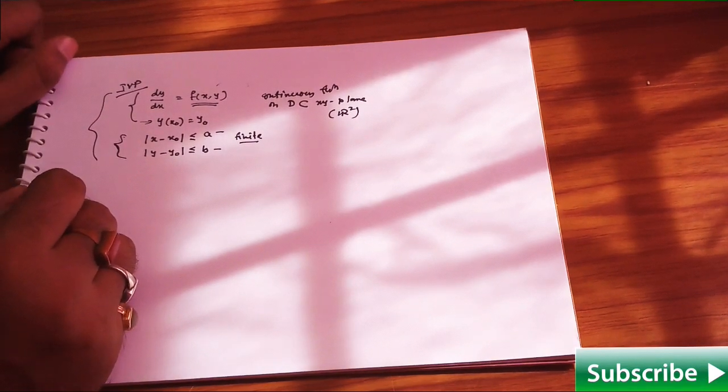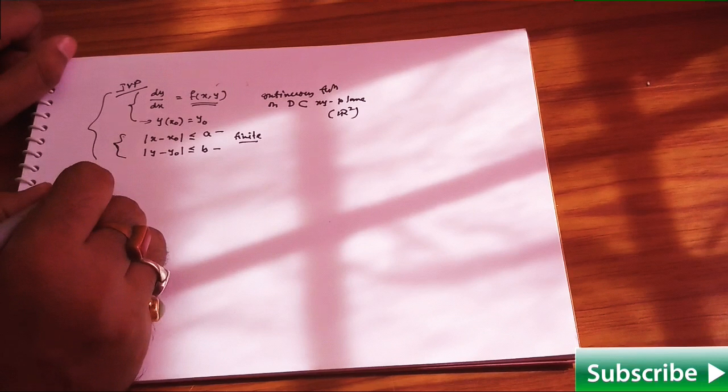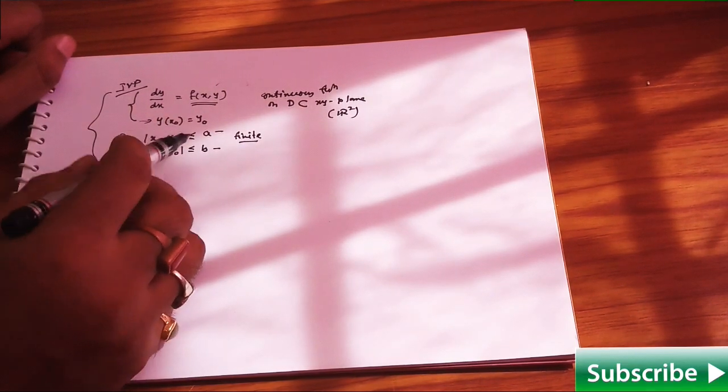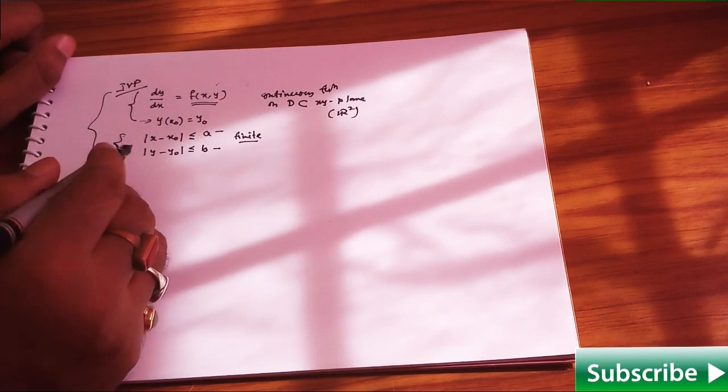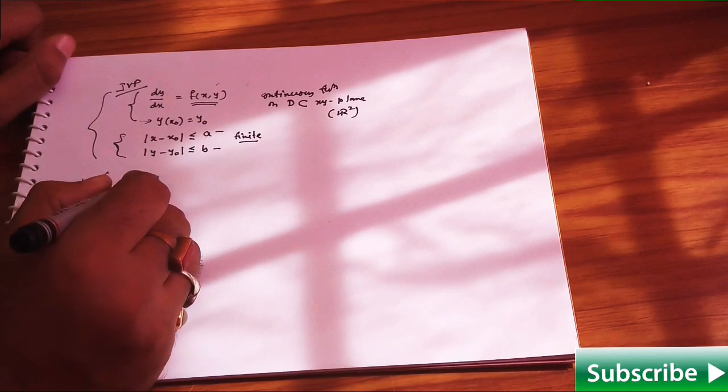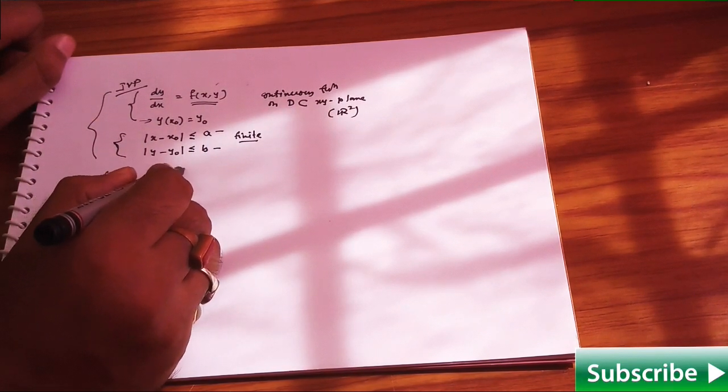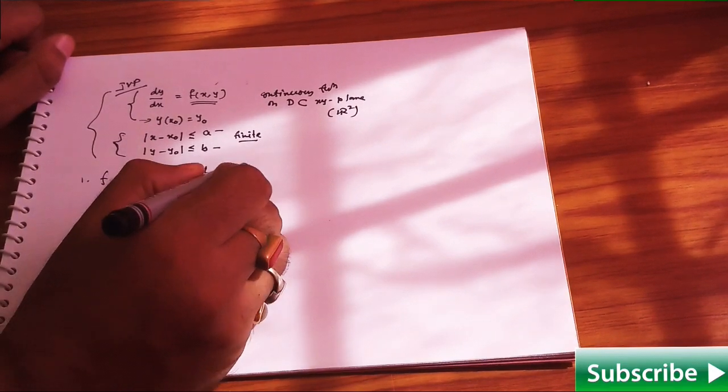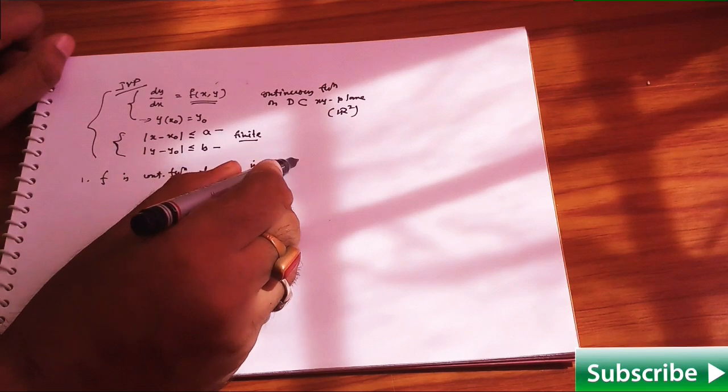The first hypothesis is this: f is a continuous function of x and y in some domain D subset of R2.